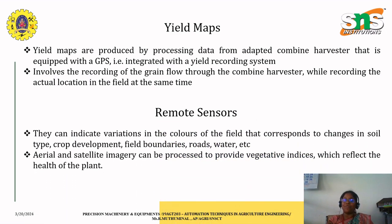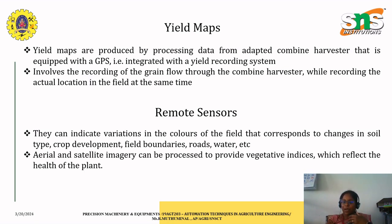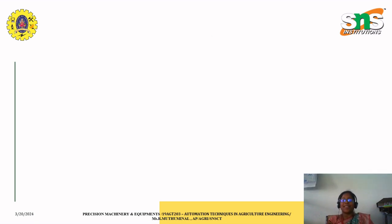We also saw how data could be remotely collected with the help of remote sensors. Aerial and satellite imagery from remote sensors can be processed to provide vegetative indices, which reflect the health of the plant. This indicates where variations are needed, allowing us to identify crop development requirements, field boundaries, and changes in soil type, so that we can increase the yield of the cultivated crop.